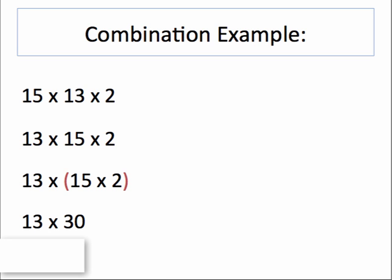13 multiplied by 30 is much easier than any other combination that we have here, and we can easily get a product of 390 without using a calculator.